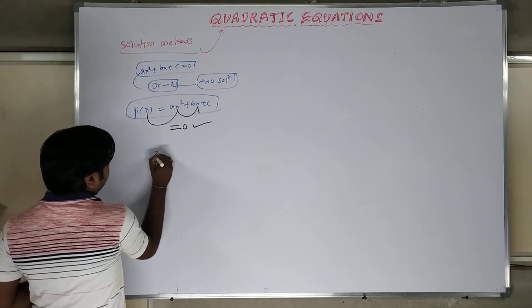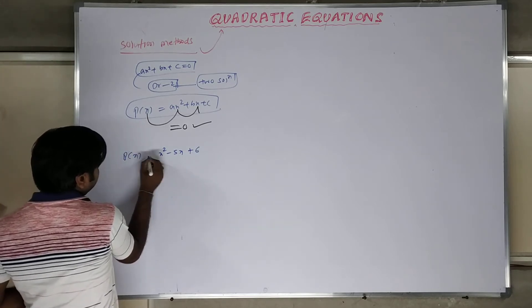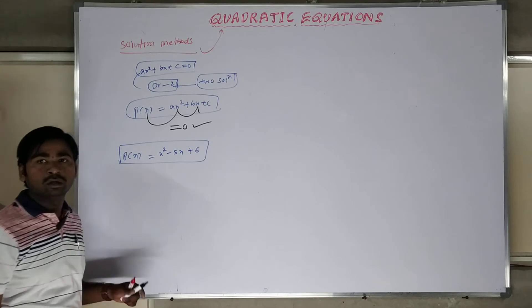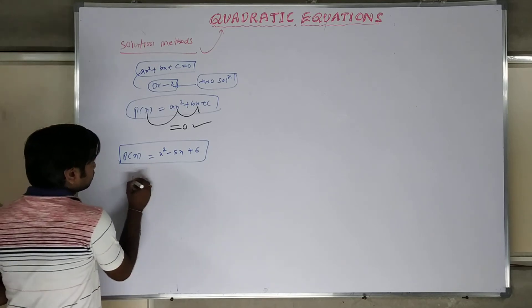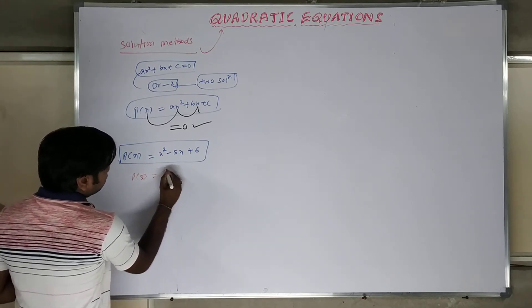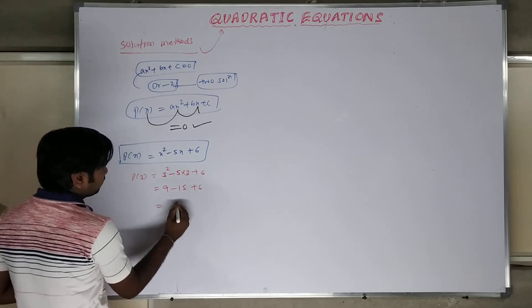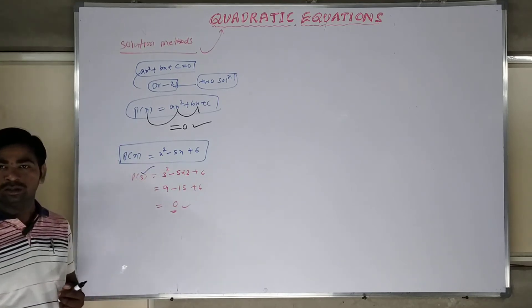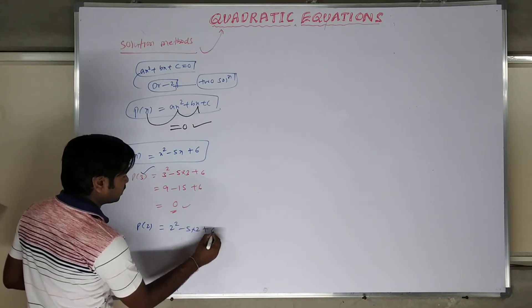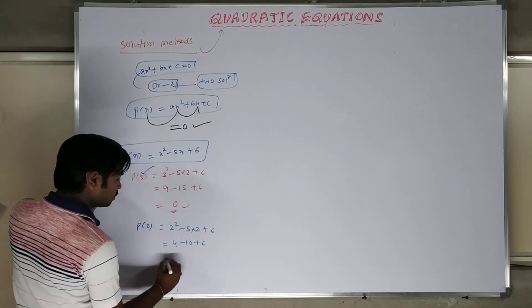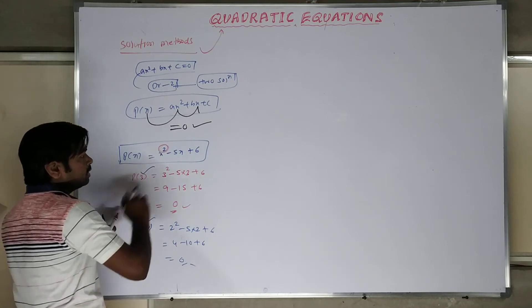For example, let us take p(x) = x² minus 5x plus 6. How much value should I substitute for x to make the equation become 0? Substituting p(3): 3² minus 5×3 plus 6 = 9 minus 15 plus 6 = 0. So 3 is a root. Substituting p(2): 2² minus 5×2 plus 6 = 4 minus 10 plus 6 = 0. So 2 is also a root. The degree is 2 and we are getting 2 roots: 3 and 2.